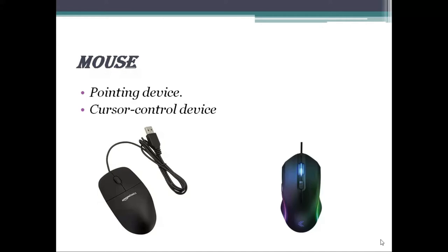The mouse looks like a mouse, that's why it's called mouse. It has two buttons — the left and right button — which control the position of the cursor on the screen and send signals to the CPU. It is very easy to use and less expensive, which is why everyone makes use of this mouse for easy usage of the computer.